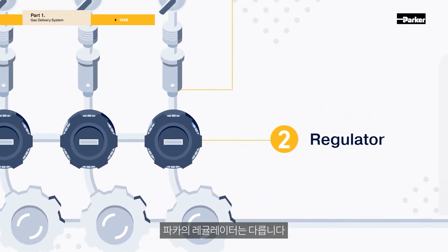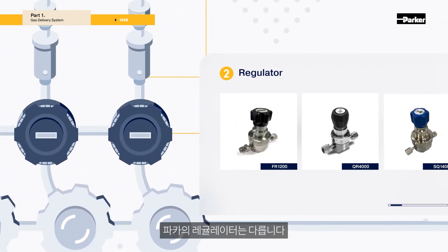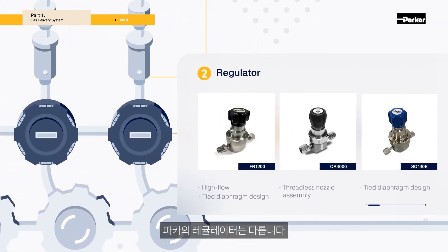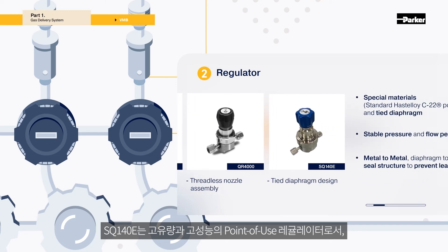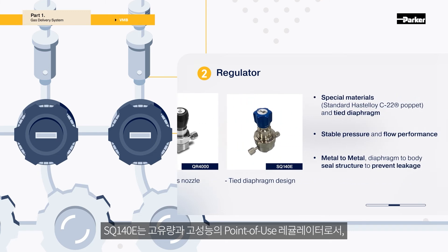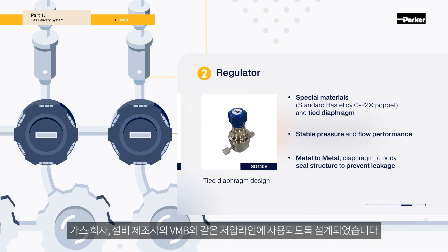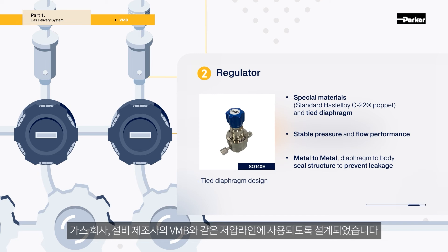Parker's regulator is invaluable. The SQ140E is a high flow, high performance point-of-use regulator, designed to be used in low pressure lines like VMB for gas companies and equipment manufacturer users.